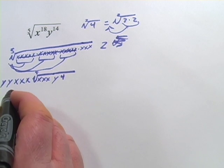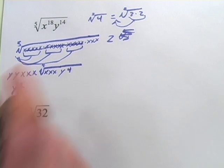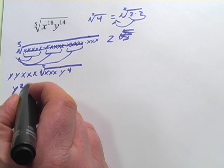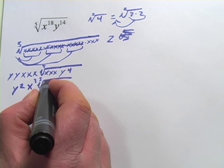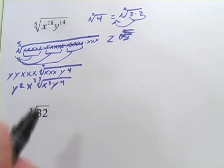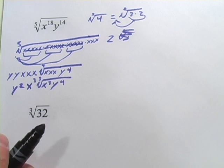Out here, similarly, two y's is y to the second, and three x's is x cubed. And then we've got our fifth root, and this is x cubed y to the fourth. And that's as simple as we can make that one.